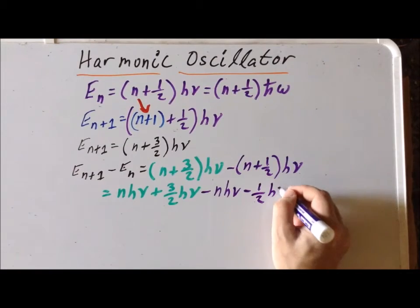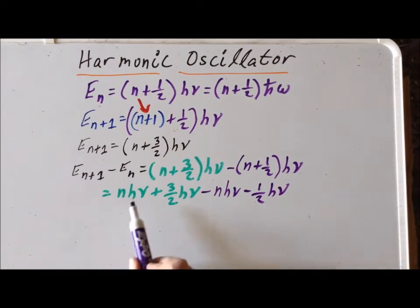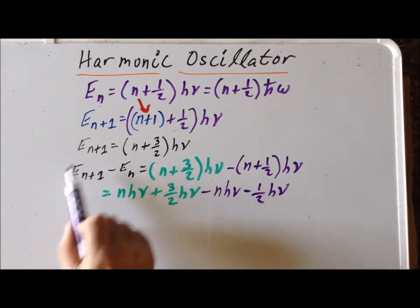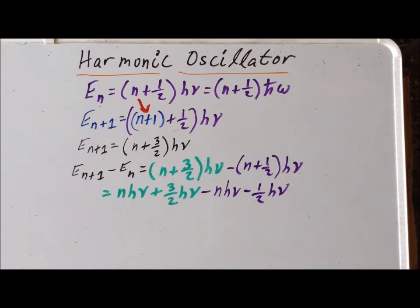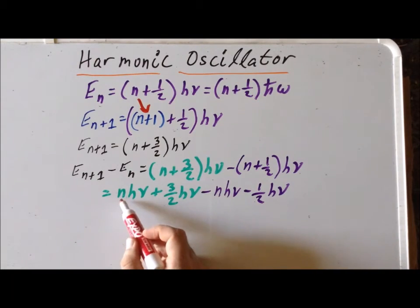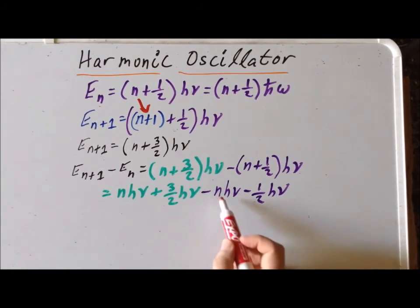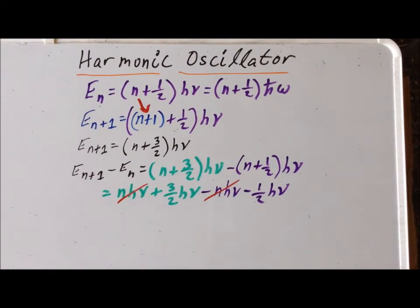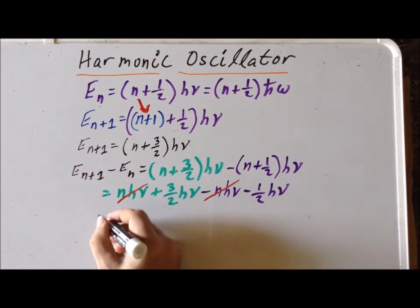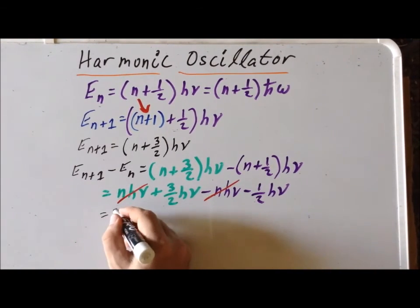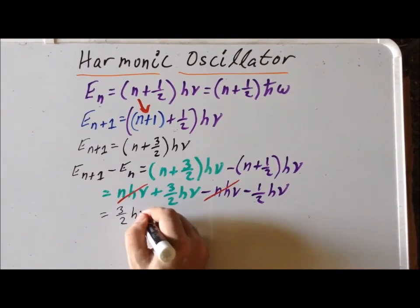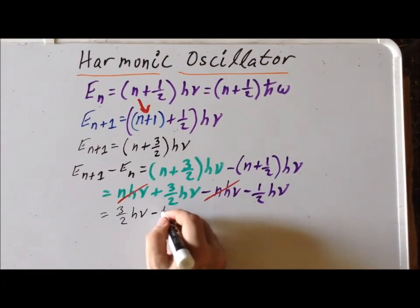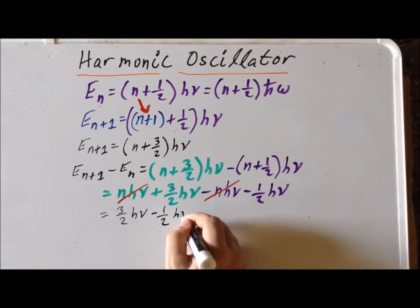This expression with four terms gives us the difference in energy between any two energy levels. Right away we notice that we have n h nu here and n h nu there. Those will add to zero. So we're left simply with three halves h nu minus one half h nu, and we can simplify this down to one h nu.